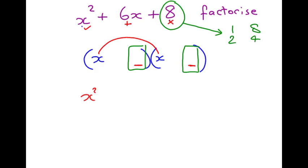3 and nothing. So, we've got all the possibilities. Now, you think, which ones add up to 6? Not 1 and 8. 2 and 4. So, you've got your numbers, 2 and 4. And it's plus 2 and plus 4. So, we've got our answer. Let's check it works.